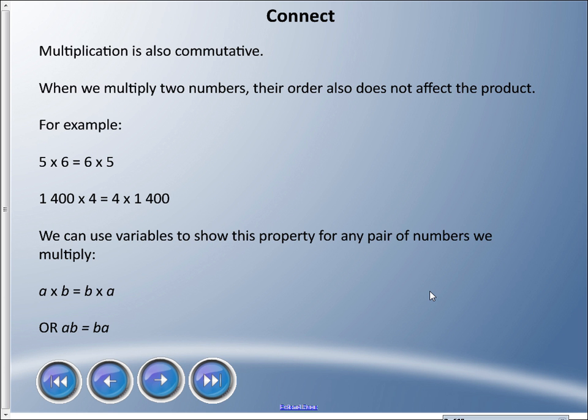We also saw that multiplication is commutative. When we multiply two numbers, their order does not affect the product. Product is the answer when you multiply. For example, 5 times 6 equals 6 times 5, 1400 times 4 equals 4 times 1400.